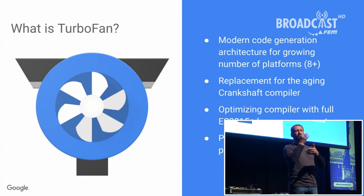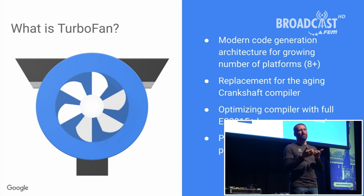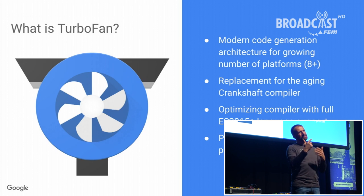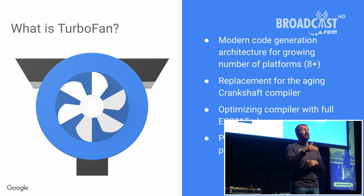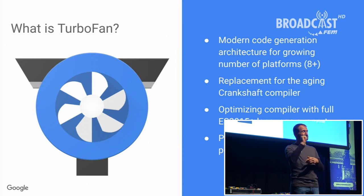So what exactly is TurboFan? At its basis, TurboFan is just a code generation architecture — we use it to generate almost all the code that we use in V8 nowadays. It's also an optimizing compiler, and we used it to replace the old Crankshaft compiler that was released in 2010. By now we have a modern compiler, because Crankshaft was suffering quite a bit — it never supported the full language, not even ES6 or newer features — whereas TurboFan supports the full language. There's nothing on which TurboFan would bail out. And most importantly, it gives you predictable performance, so you no longer have those performance cliffs we used to have with Crankshaft.